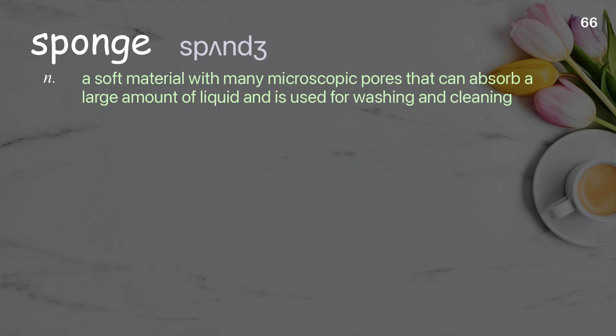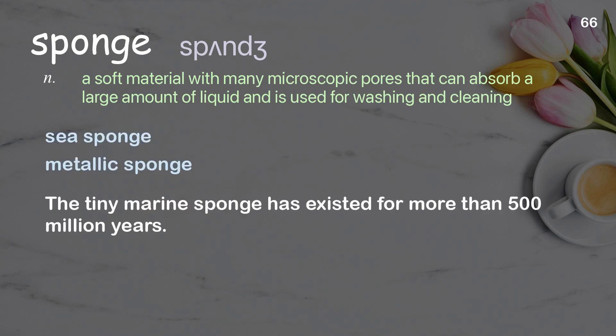Sponge: A soft material with many microscopic pores that can absorb a large amount of liquid and is used for washing and cleaning. Examples: sea sponge, metallic sponge. The tiny marine sponge has existed for more than 500 million years.